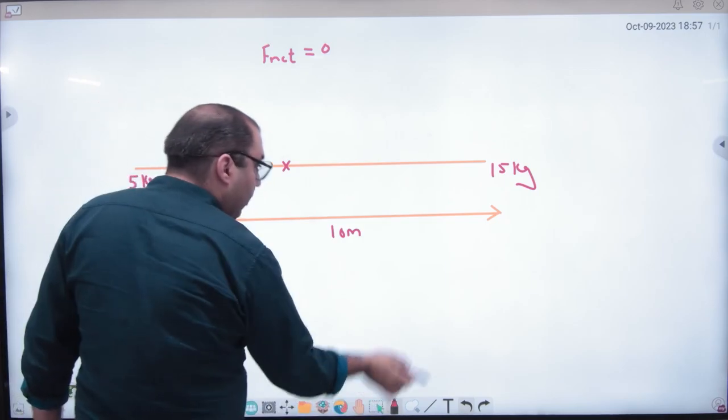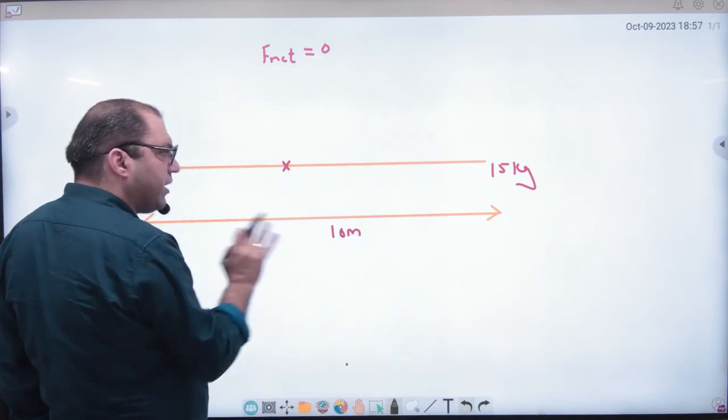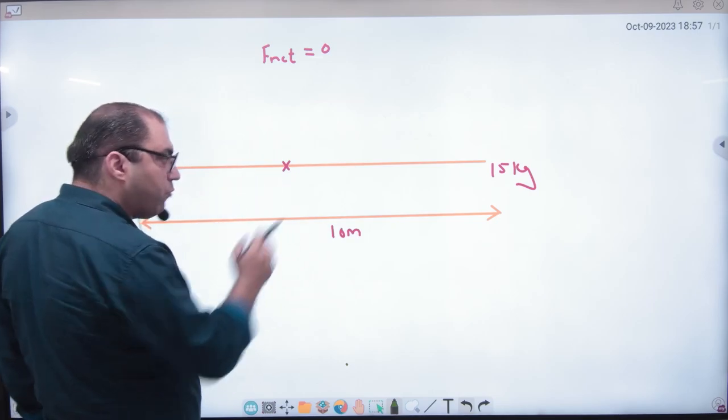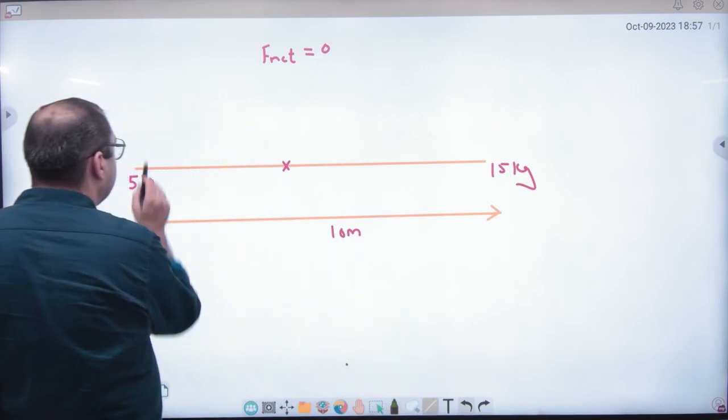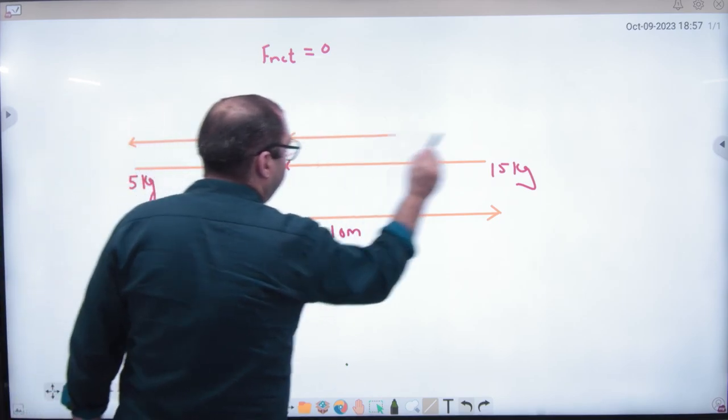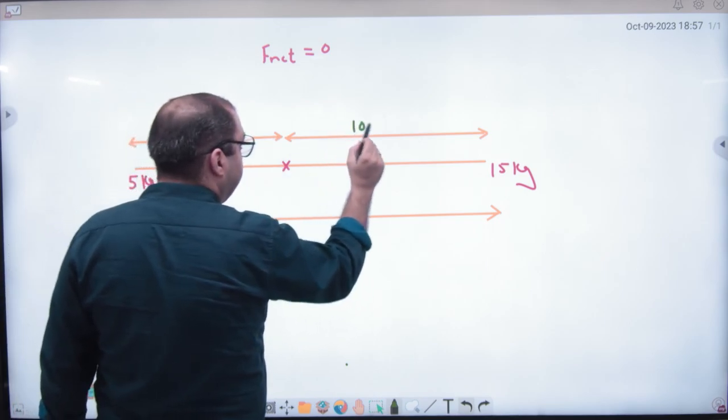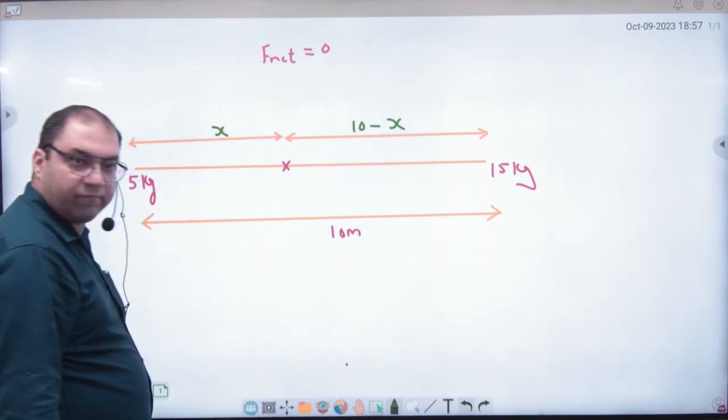On what? One such mass which is not given to me, but if I place any mass there, net force on it becomes zero. Tell that point, tell that distance. So what will I do? I will assume in this, this distance is how much? X. If this distance is x, then this is how much? 10 minus x. Clear till here?